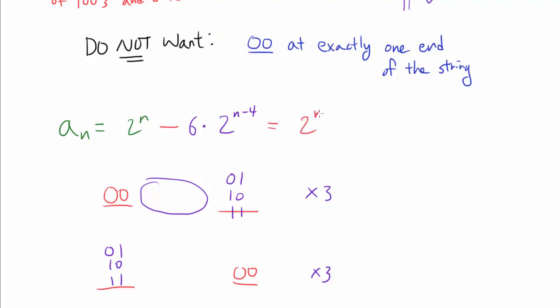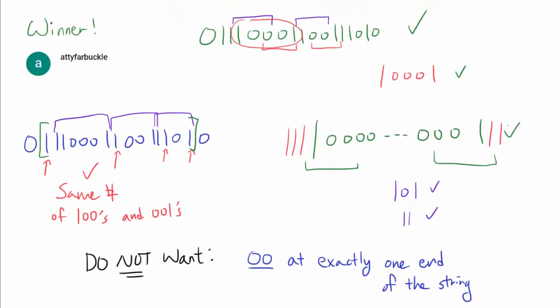So the ones that we want, we can factor out 2^(n-4). When we take out 2^(n-4) from 2^n, that leaves 2^4, and we are taking away 6. 2^4 is 16, minus 6 is 10. So we have gotten a formula for a_n, when n is greater than or equal to 4. Obviously, we should have at least 4 digits for this argument to work, because our argument depends on having 2 digits at the left hand and 2 digits at the right hand.